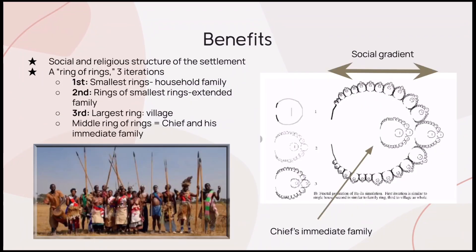The fractal design helps them order their village by social structure, with a decreasing size from the center representing a social gradient. There are three iterations in one village, with the smallest rings being small households, the rings of smaller rings being extended family, and the largest ring being the entire village. Each ring consists of a house and a livestock pen, and there are storage houses dotting the outskirts of the rings. In the center is a second iteration ring that belongs to the chief and his immediate family members. The Ba'ila people, like most African civilizations, were closely tied by kinship, so the use of fractals in their architecture conveys their cultural values in this way.